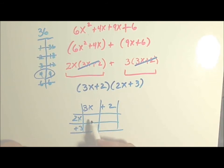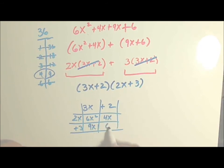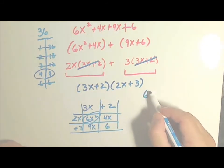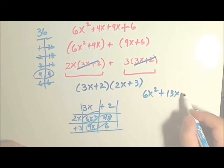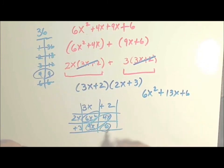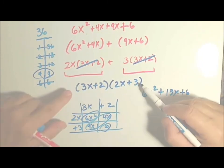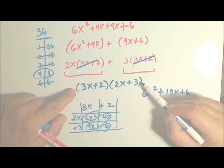So I'm going to multiply these binomials and see what they come out to. 3x times 2x is 6x squared. 2 times 2x is 4x. 3 times 3x is 9x. And 2 times 3 is 6. So I have a 6x squared. I have 4x and 9x. That's 13x. And I have a 6.